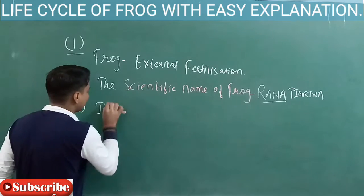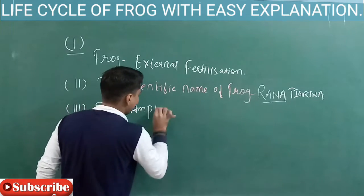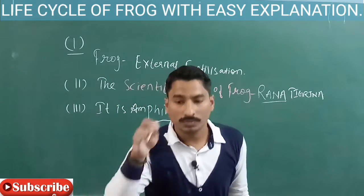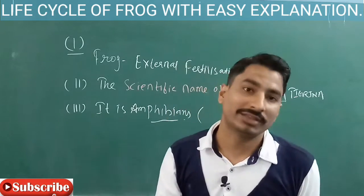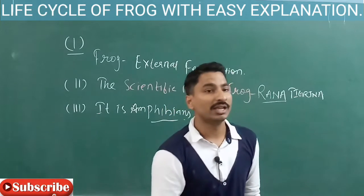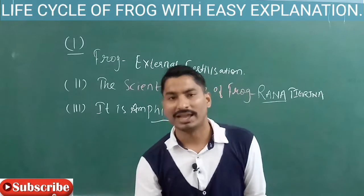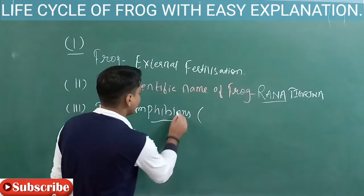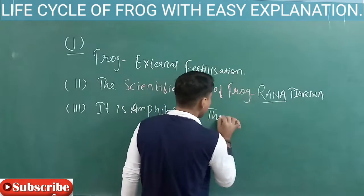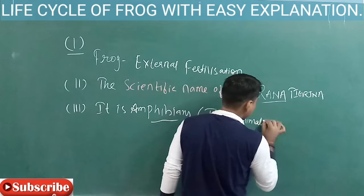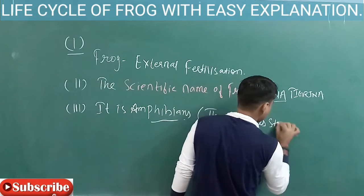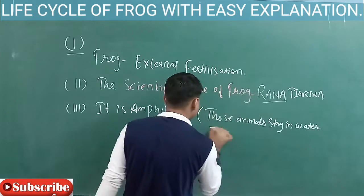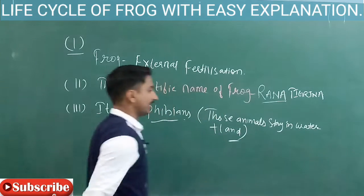The third point is that the frog is an amphibian. Amphibians means those animals that can live both on land and in water. Frog and snakes — these all come under amphibians. So you will definitely encounter this word in science, especially in biology. Amphibians — definition in bracket: those animals that stay in water plus land.